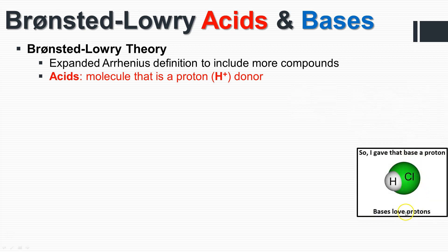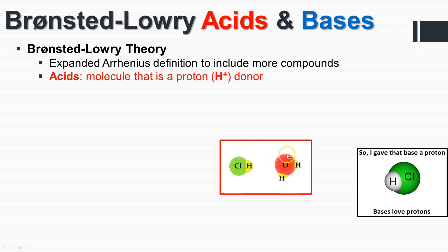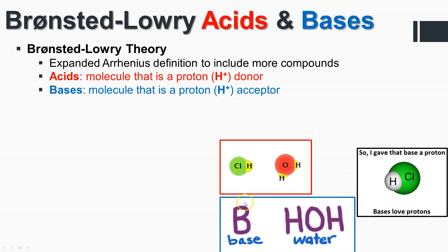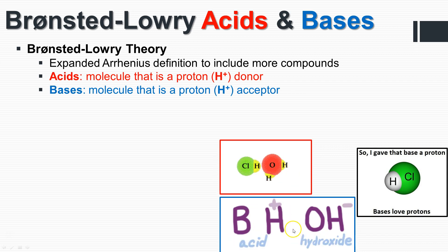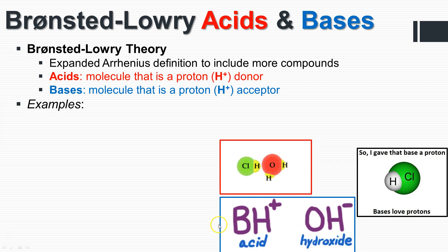The acid gives the base a proton — bases love protons. Here you can see we have hydrochloric acid donating that proton to the water molecule to form hydronium. A base is a molecule that is a proton acceptor. Water accepts the H — the proton — from the hydrochloric acid, becoming the conjugate acid. The proton goes to the base, which makes it a Brønsted-Lowry base.